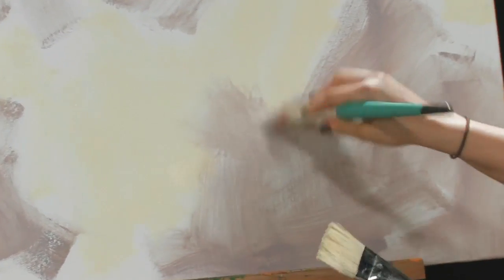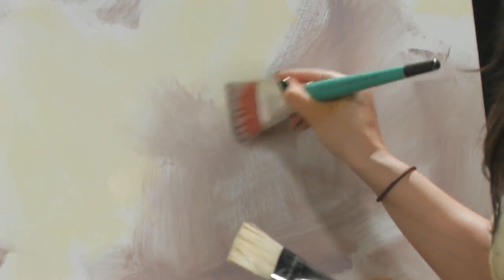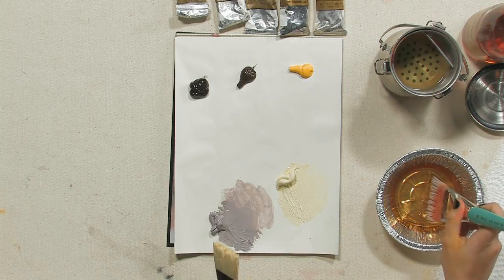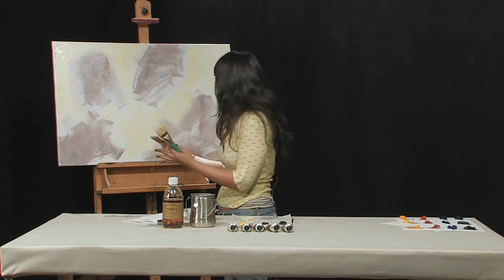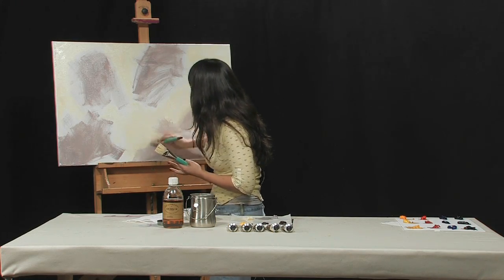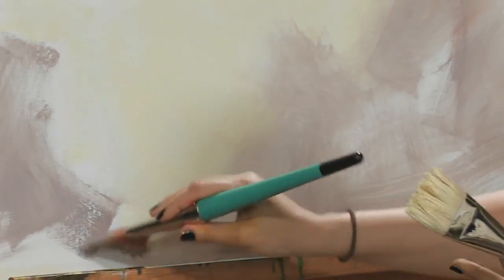So you come in and you lightly blend the edges. You don't want to really add more color at first, you just kind of maybe add a little bit more medium to blend it.